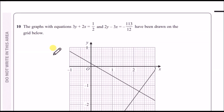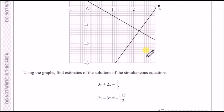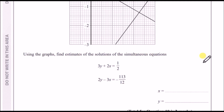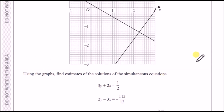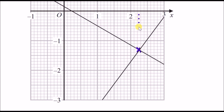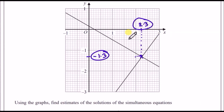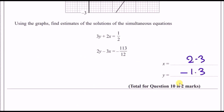Number ten: the graphs of 3y + 2x = ½ and 2y − 3x = that fraction are two straight lines that intersect. To find estimates of the solutions of the simultaneous equations, just read off the intersection point from the graph. Drawing dotted lines across and down from the intersection, x ≈ 2.3 and y ≈ −1.3.